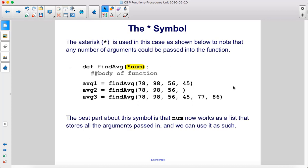The asterisk is used in this case as shown below to note that any number of arguments could be passed into the function. We have asterisk num. The best part about this symbol is that num now works as a list that stores all the arguments passed in and we can use it as such.